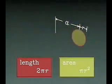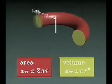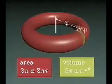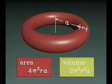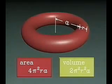Pi shows up whenever circles do, in formulas for areas and volumes of solids of revolution. But it also shows up in some problems where there are no circles at all. For example, drop a needle on a floor whose boards are twice as wide as the needle length.